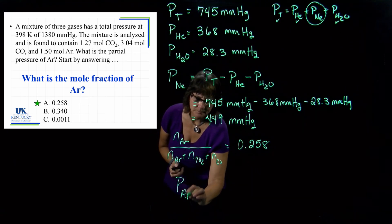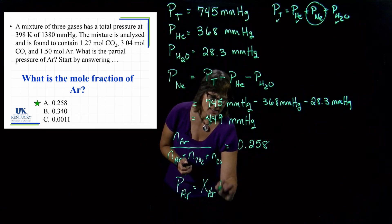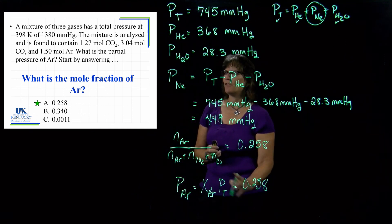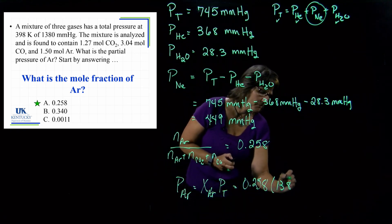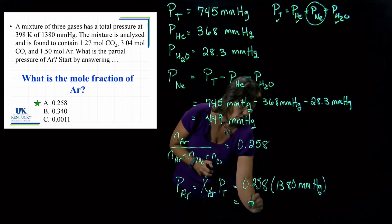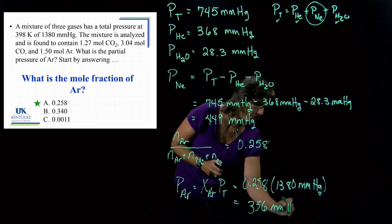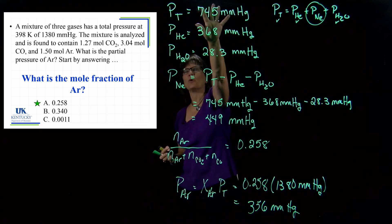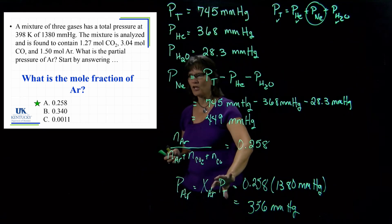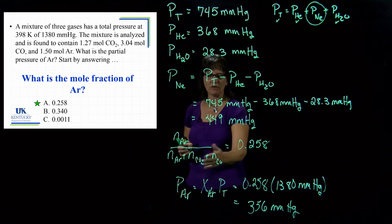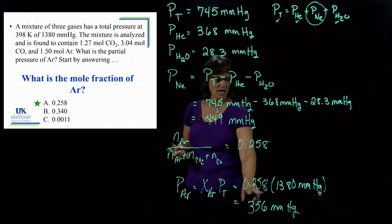Now we can find the partial pressure of argon: it equals the mole fraction of argon times the total pressure. That's 0.258 (no units) times 1380 mmHg, which equals 356 mmHg. So we've seen two ways of working with partial pressures: one using known individual pressures with Dalton's Law, and the other using mole information to get a mole fraction and then multiplying by total pressure.